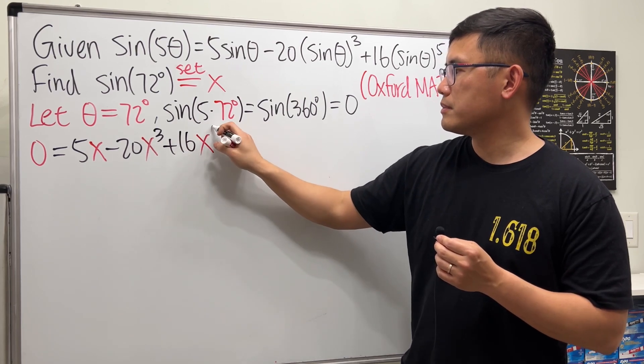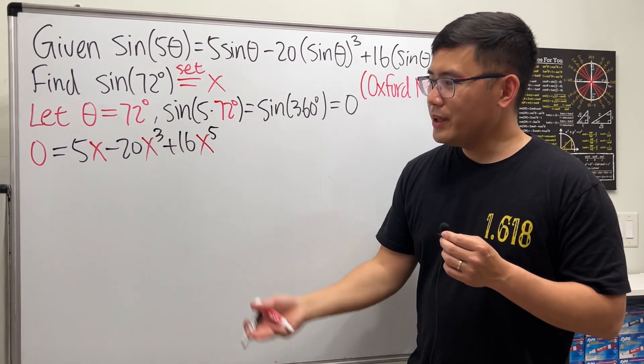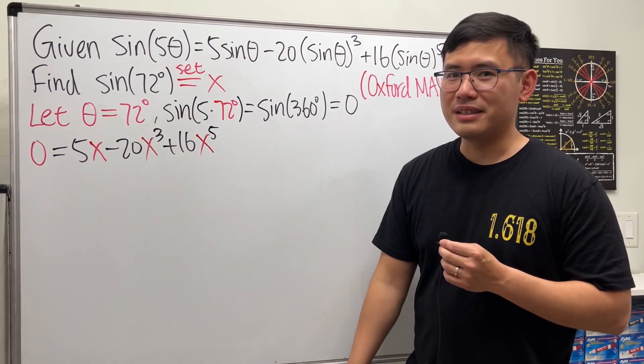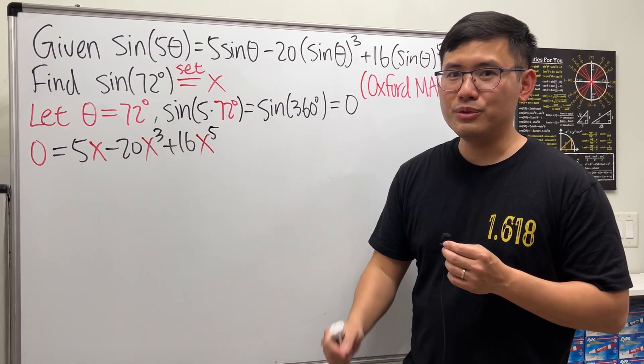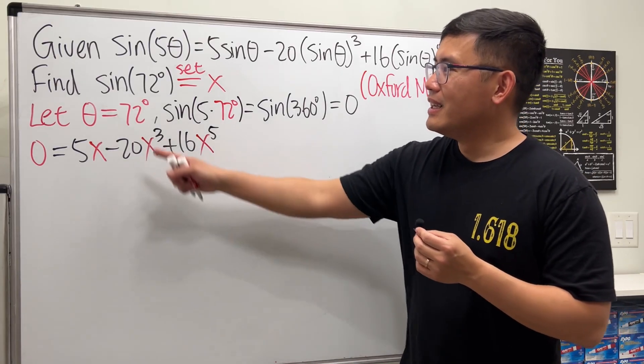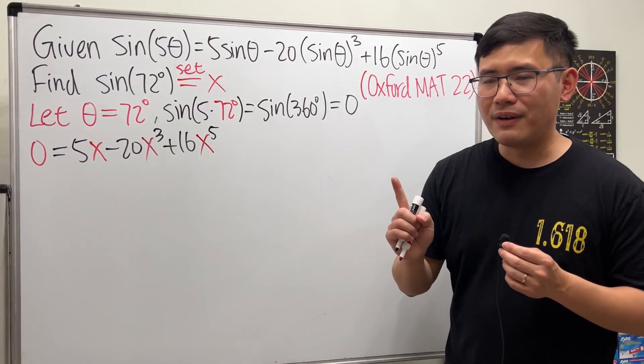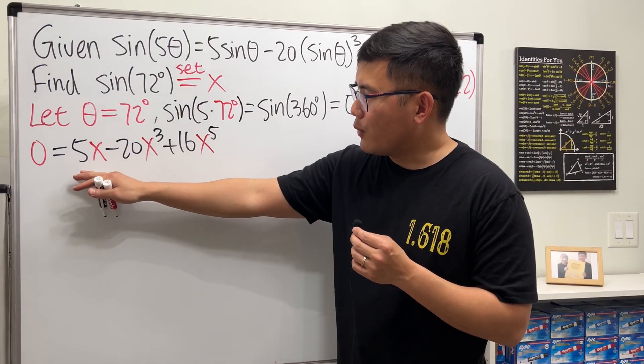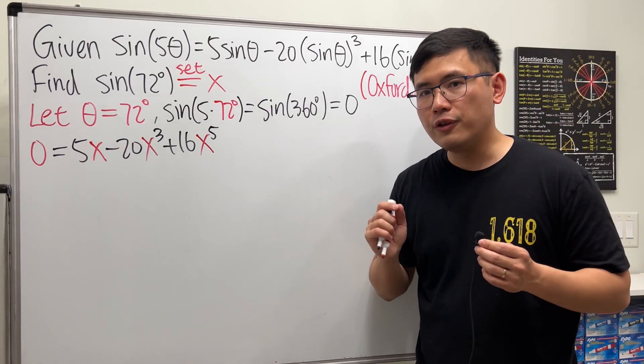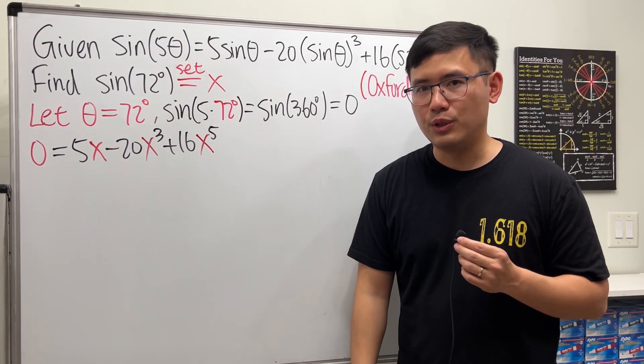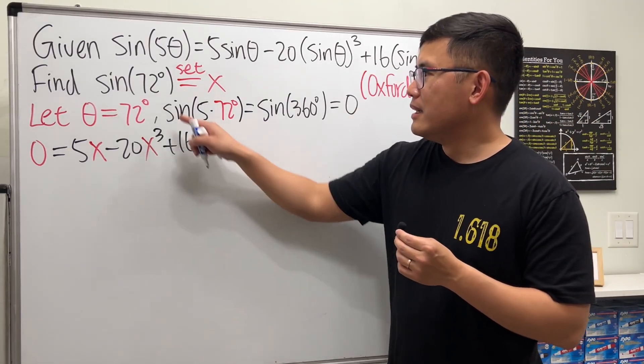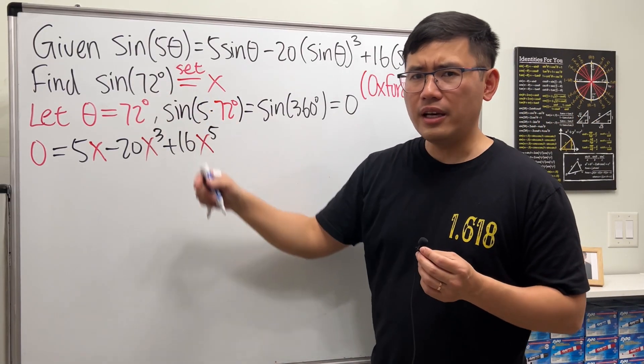Continue minus 20x³, and then plus 16x⁵. So we end up with a fifth-degree equation. How many solutions are we going to get? Possibly five real solutions, right? Well, the hard part is sine of 72 degrees is only one value, so we are just going to focus on solving this equation.